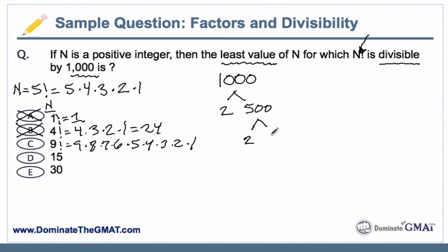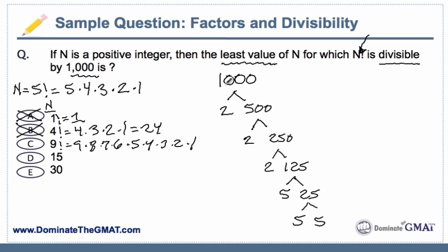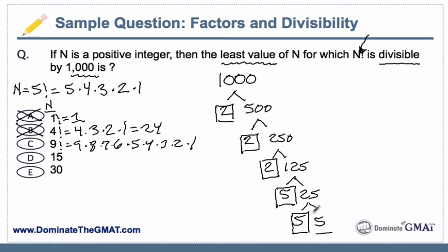500 breaks out into 2 times 250, and 250 can be broken down into 2 times 125. 2 no longer goes into 125, nor does 3. The next prime number is 5, so 5 times 25, and then 25 is 5 times 5. We have just figured out what the building blocks of 1,000 are: we have three 2s and we have three 5s. The least multiple must also have the same building blocks — at least three 2s and at least three 5s in its prime factorization. It can have other prime factors, but it must have at least those same building blocks.